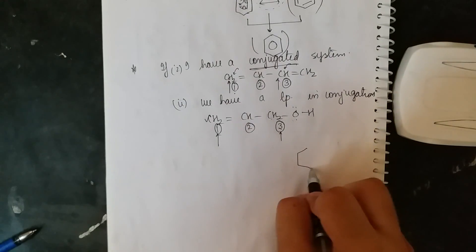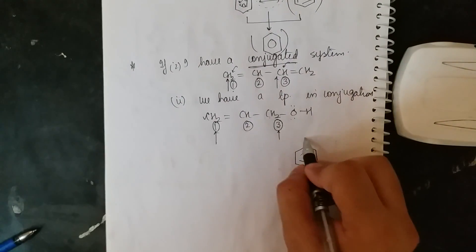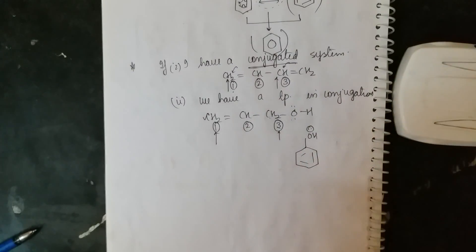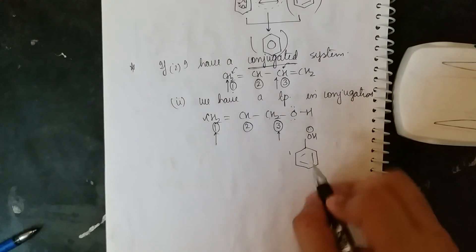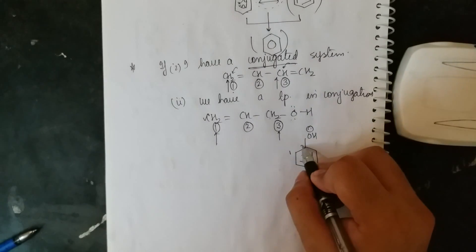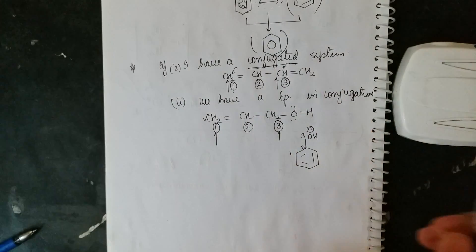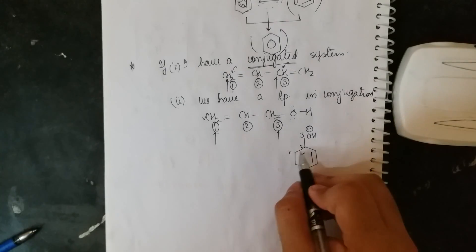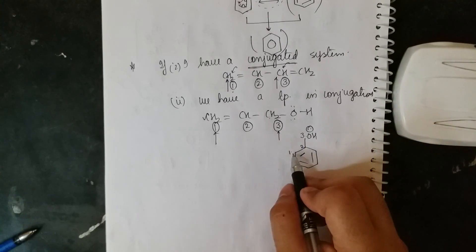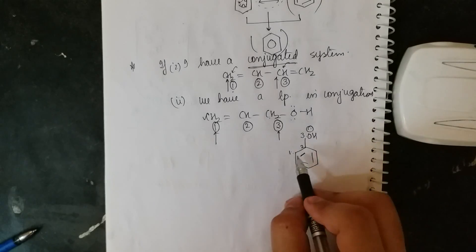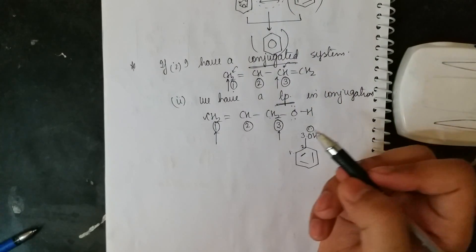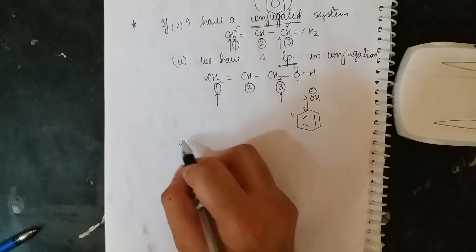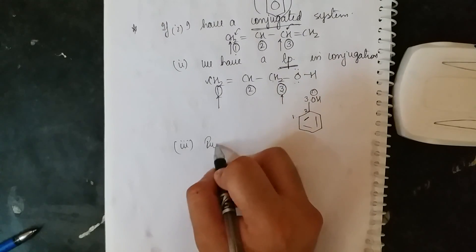Take a structure like benzene with OH on it. This lone pair is in conjugation. Naming the carbon where the double bond begins as one — one, two, three — we see that on the first and the third carbon we have a lone pair in conjugation, and hence these will be in resonance.